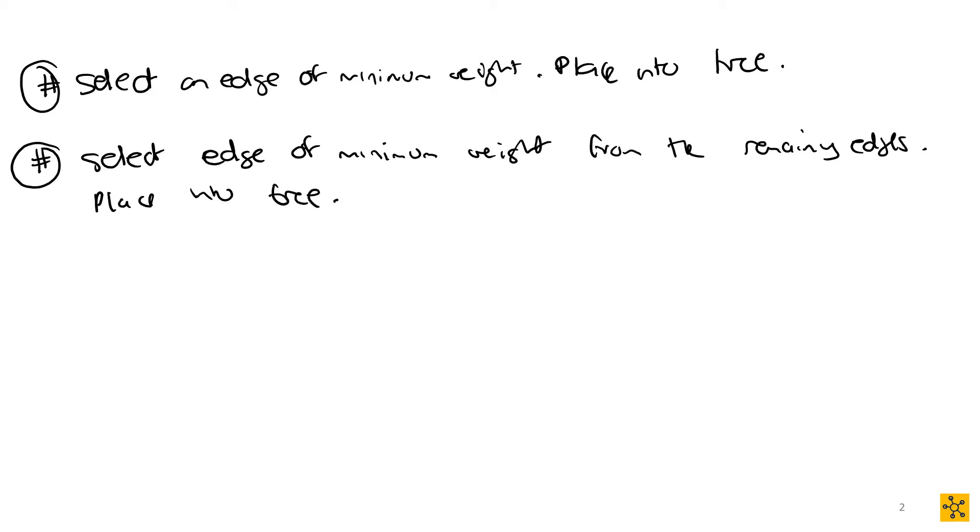And we place it into a tree along with one important rule because I spoke about the fact that we're referring to or we're building up a minimum spanning tree from like a forest approach. But this also means that when we add our edges, we have to make sure that no cycles are created. So we can place it into the tree as long as it does not form a cycle. So there's a rule here. We place into tree as long as no cycles are formed. And then we repeat until we have n minus 1 edges.